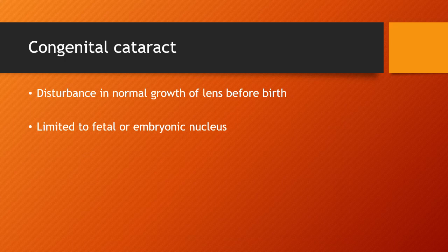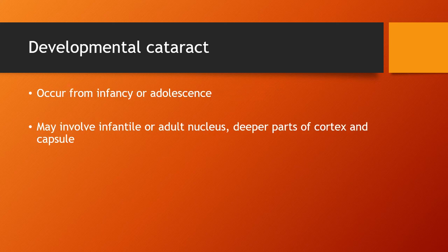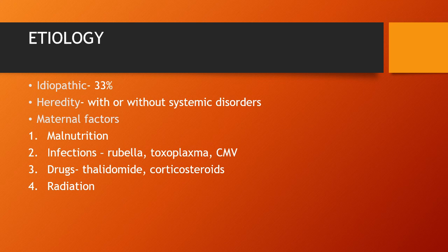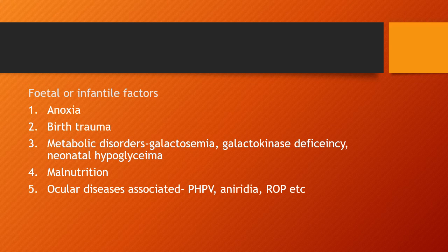Coming to congenital cataract — congenital cataract occurs due to disturbance in the normal growth of the lens before birth and is limited to the fetal or embryonic nucleus. In developmental cataract, it occurs from infancy or adolescence and may involve the infantile or adult nucleus and deeper parts of the cortex and capsule. 33% of cases are idiopathic. Hereditary causes include those with or without systemic disorders. Maternal factors include malnutrition, infections like rubella, toxoplasma, and cytomegalovirus during pregnancy, intake of drugs like thalidomide and corticosteroids, and radiation. Fetal or infantile factors include anoxia, birth trauma, metabolic disorders like galactosemia, galactokinase deficiency, neonatal hypoglycemia, malnutrition, and associated ocular diseases like PHPV, aniridia, and ROP.